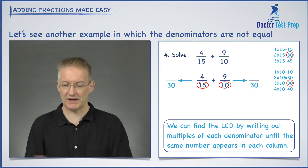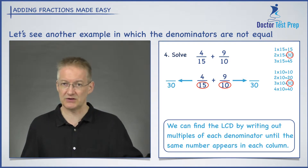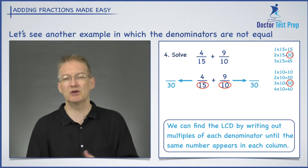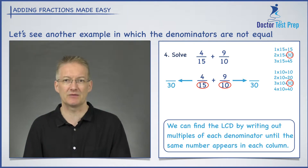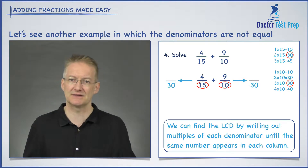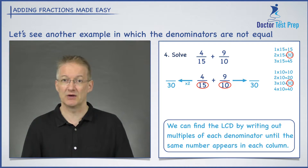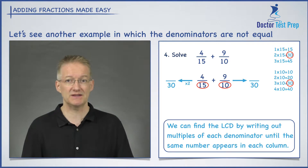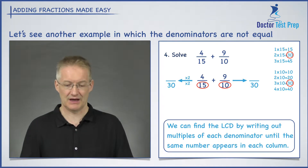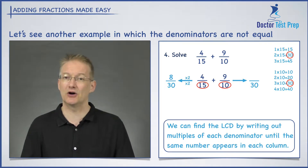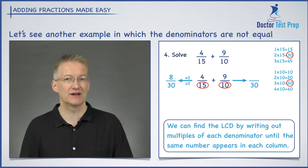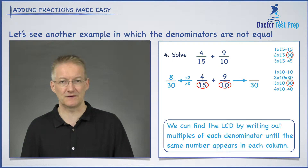I've got my arrows going out there, with 30 as the new denominator. Looking at 4 fifteenths, what did I do to the 15 in order to get to 30? I multiply by 2. If I multiply the bottom by 2, I multiply the top by 2, and I get 8 over 30. So 8 over 30 is exactly the same fraction as 4 over 15.